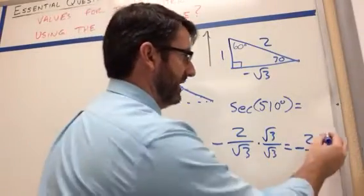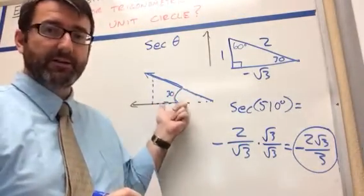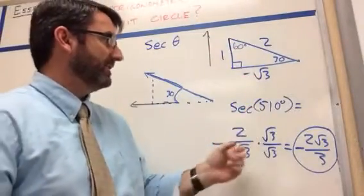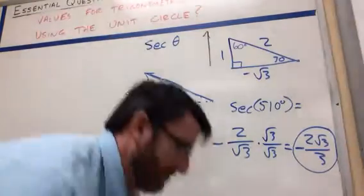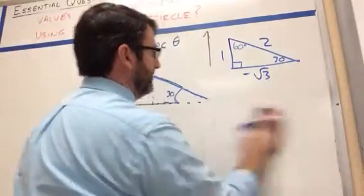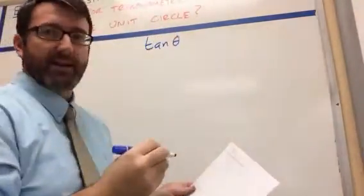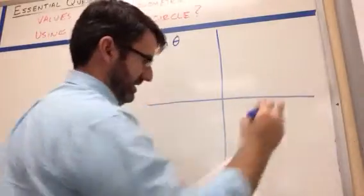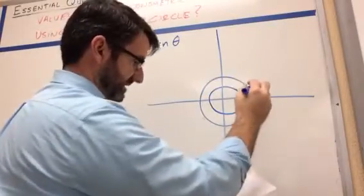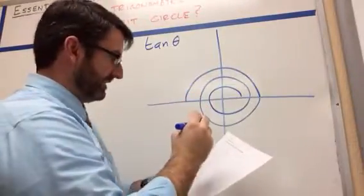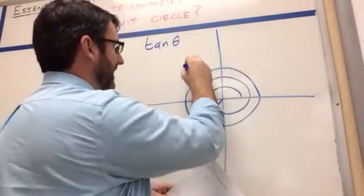Root 3 times root 3 is 3, and that's our answer. The steps are to find your reference triangle, set that up, and use it to find the trig function you're looking for. Now let's do number three. Number three is asking us to find the tangent of a 945 degree angle. That's going all the way around twice — 900 degrees — and then another half loop down to 945 degrees.